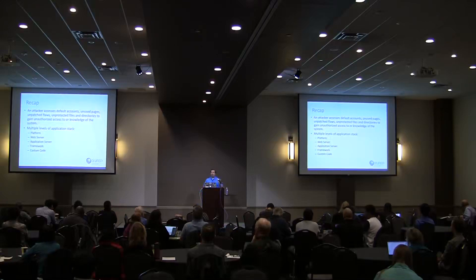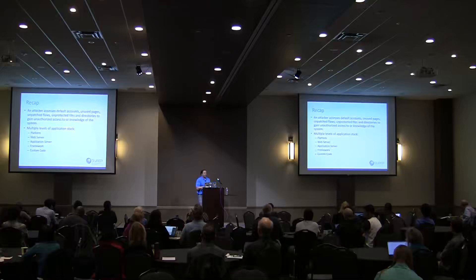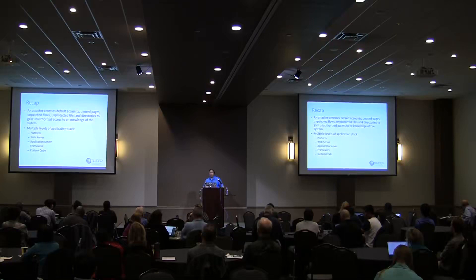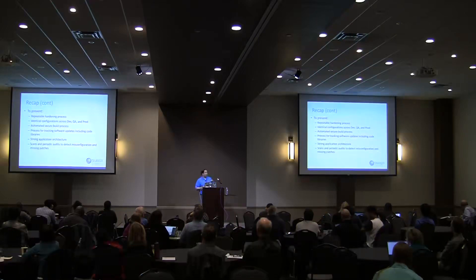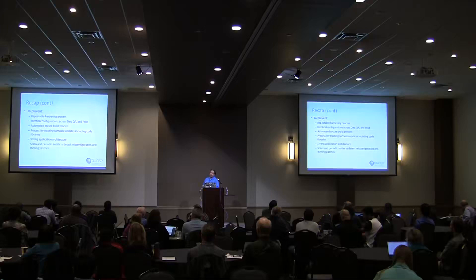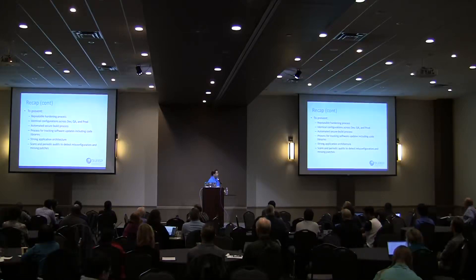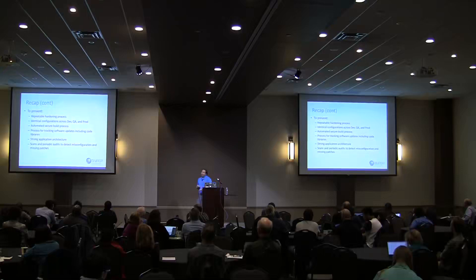Recap: an attacker accesses default accounts, unused pages, unpatched flaws, unprotected files and directories, and gains unauthorized access to or knowledge of the system. Multiple levels of the application stack could be affected — from the web server, app server, to custom code. To prevent it: we need a repeatable hardening process, check our configurations, maintain identical configurations across dev, QA, and production, an automated secure build process, a process for tracking software updates including code libraries, a strong application architecture, and periodic audits.